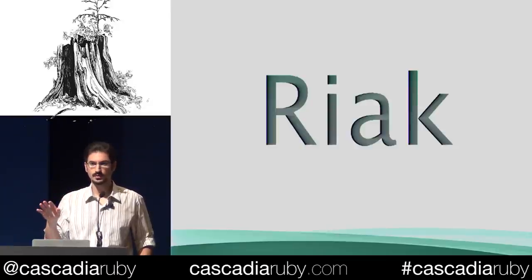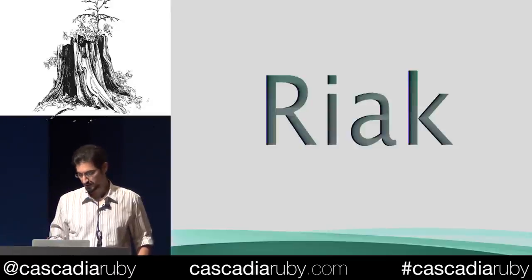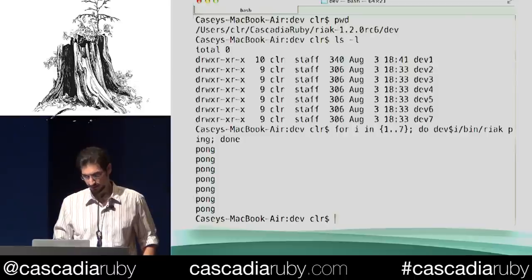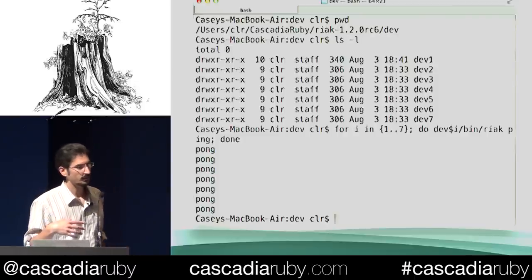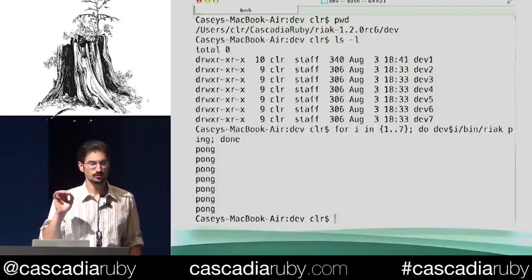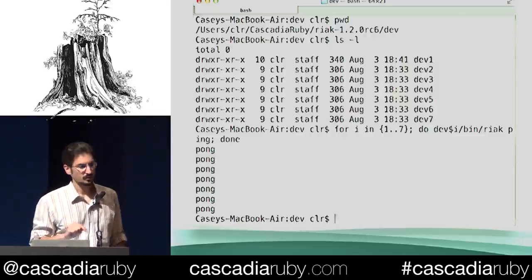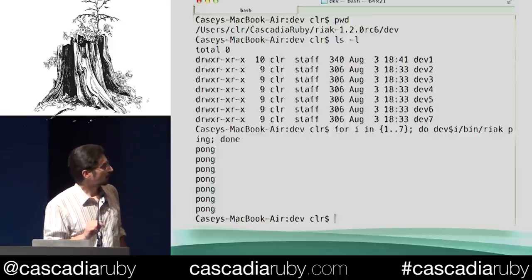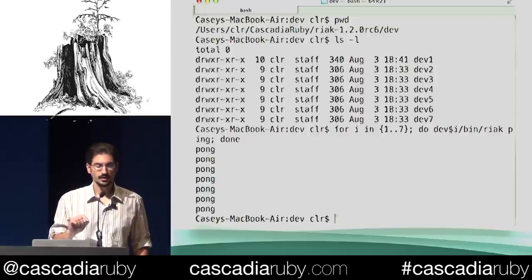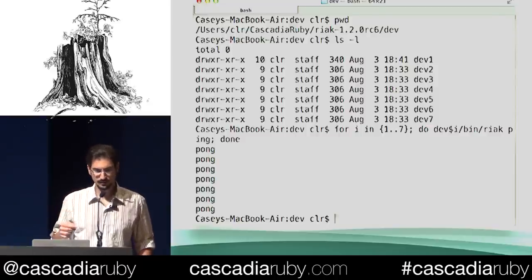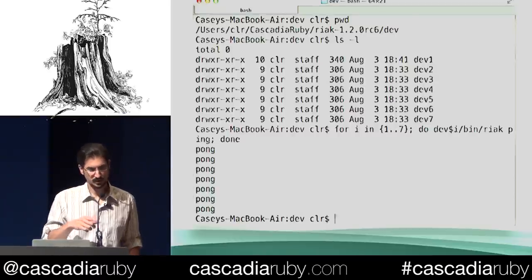Just as a very simple distributed system, let's study it. On this laptop, I have seven nodes running in a Riak cluster. Just to prove it, here's bash — there's the directory I'm in, Cascadia Ruby Dev, dev one through seven. All seven of those are individual nodes running their own Erlang VMs. And then for all seven of those, I just run a ping and I get seven pongs back.